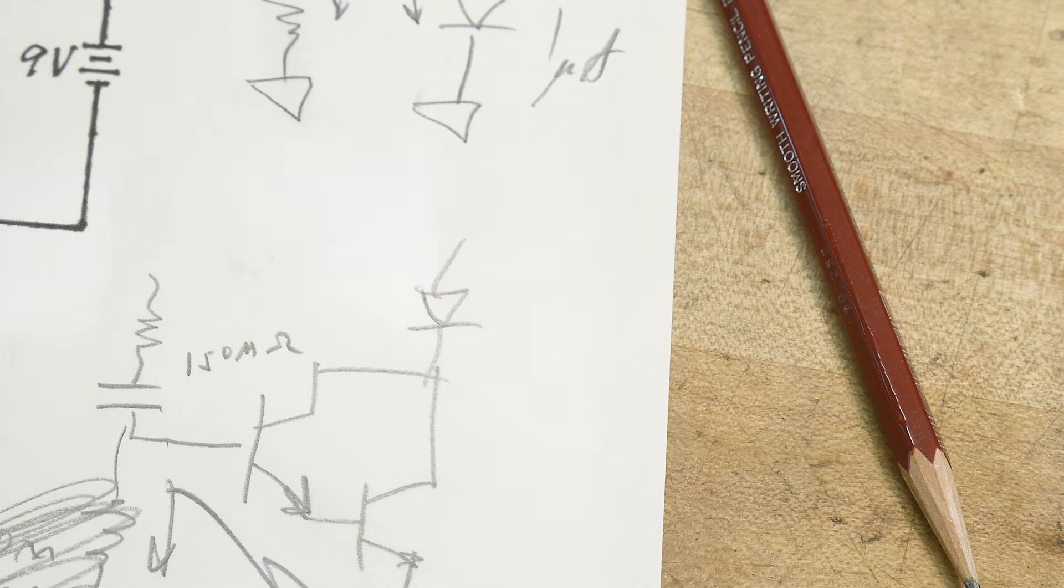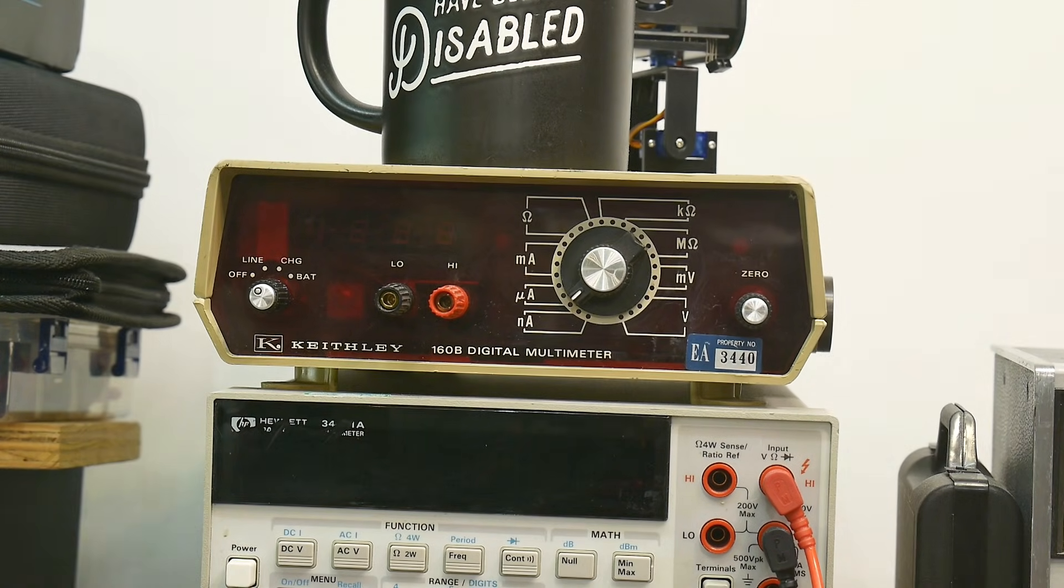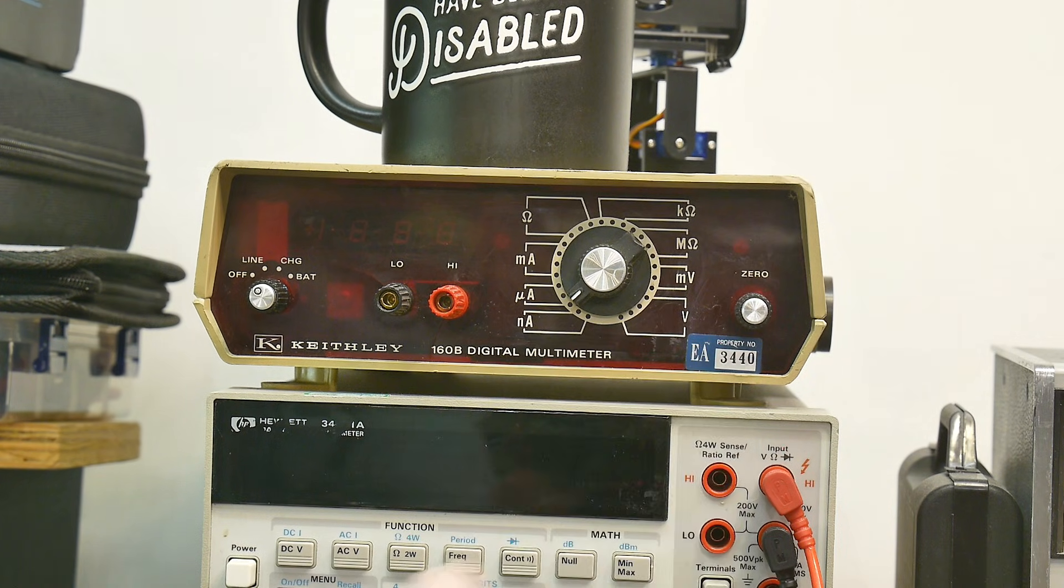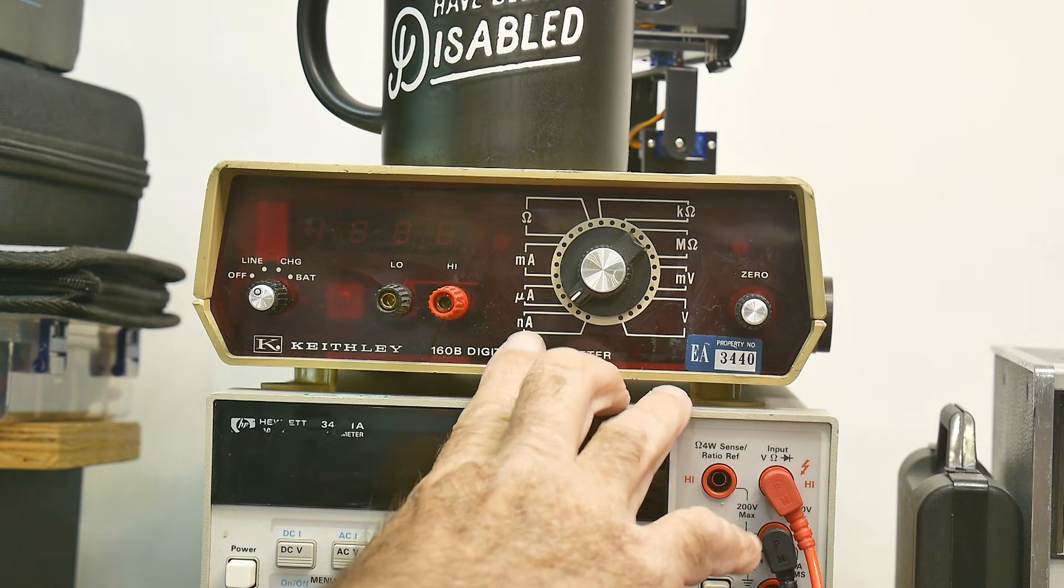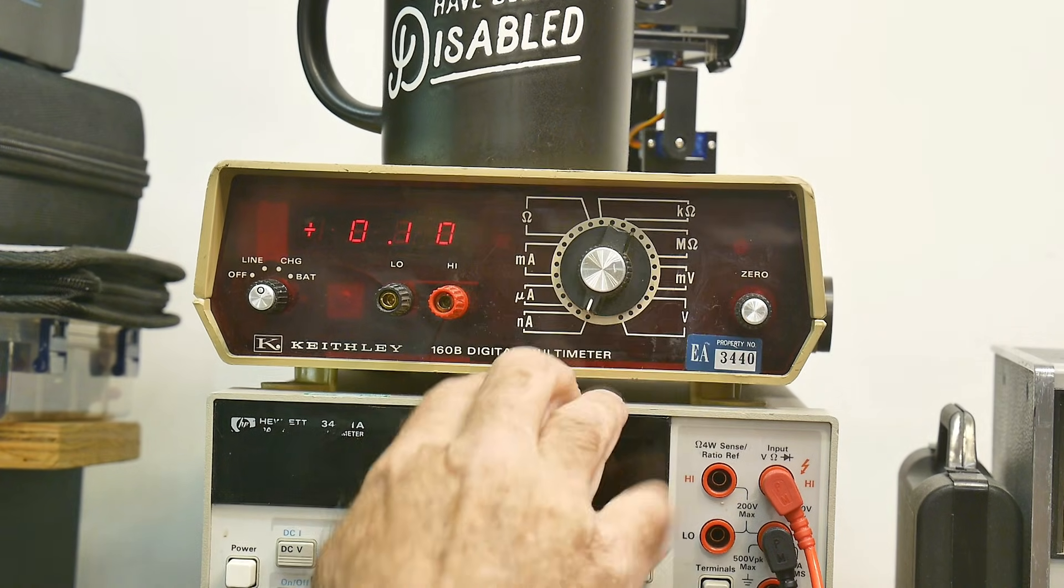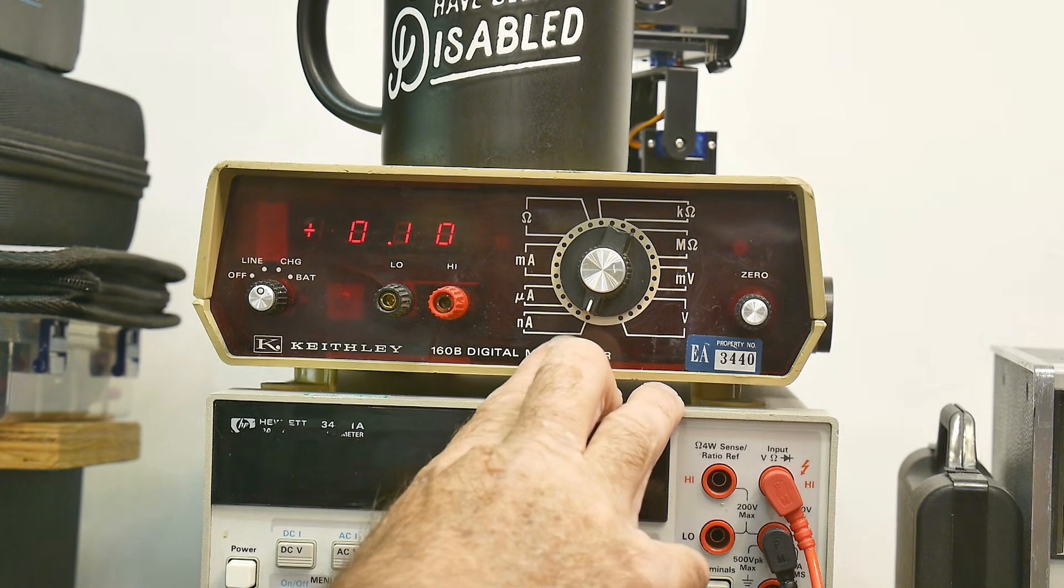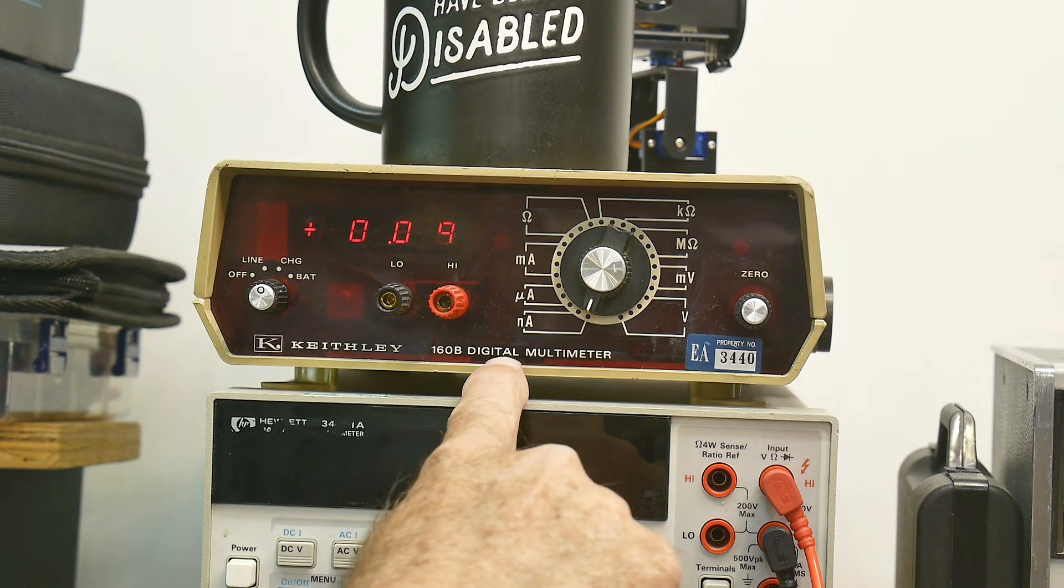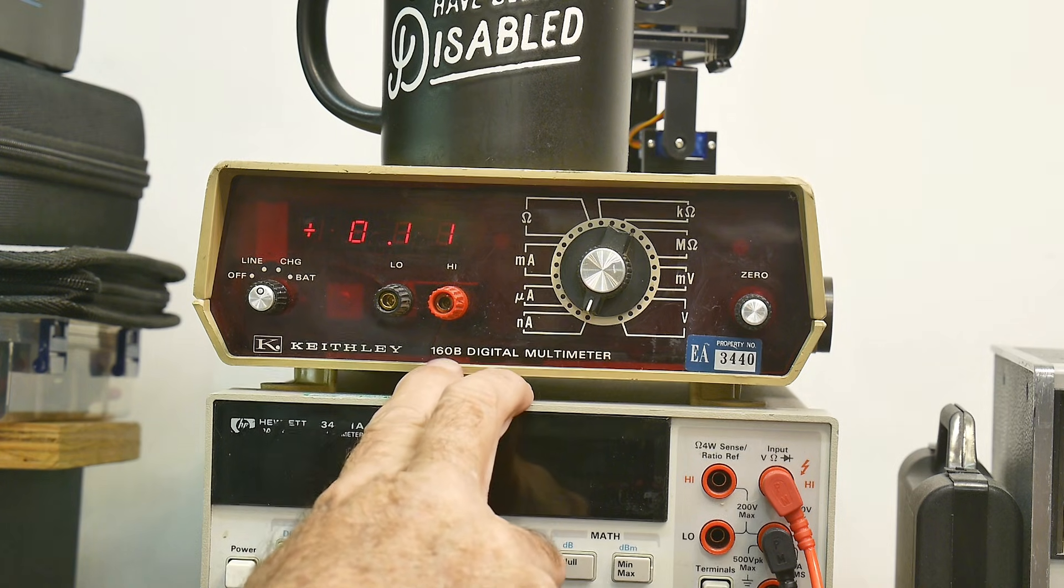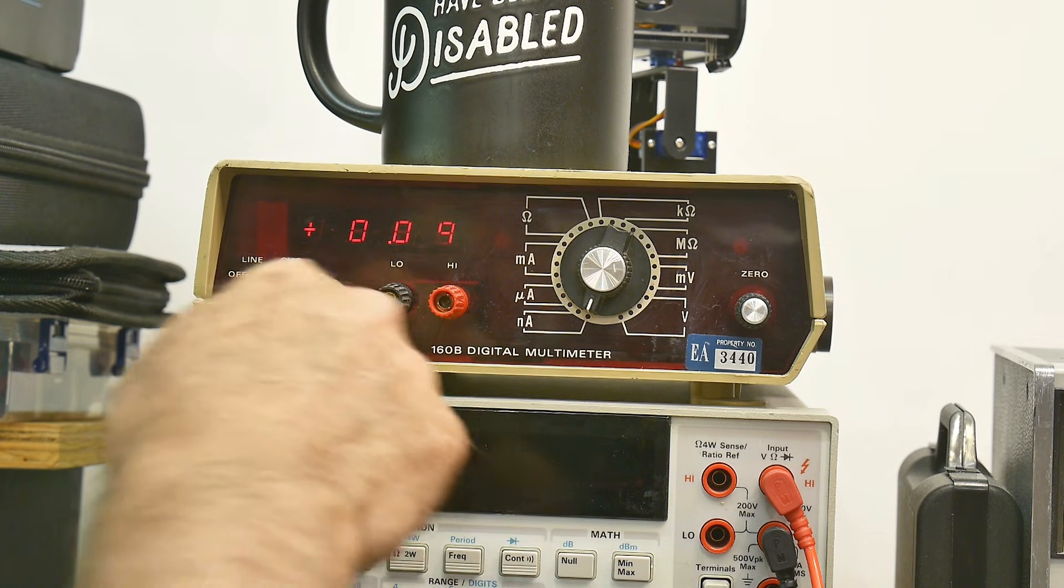You can get cheap Keithleys if you're lucky. I showed one before. I had a video on me acquiring this thing. It looks like a really cheesy voltmeter, but it actually, look at this, it goes down to nanoamps. Let's turn it on here. Yeah, 0.01 nanoamps. So the resolution thing is 0.01 nanoamps. So even though it says digital multimeter, it's actually an electrometer. The 160B is an electrometer. So yeah, this would be really great for testing capacitors. So if you're lucky to get ahold of one of these, that'd be good, but most people don't.